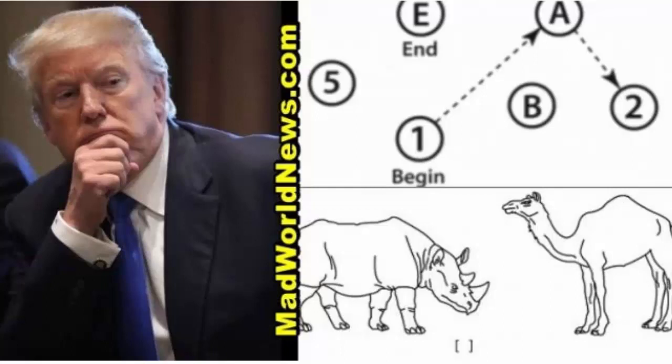Question 7: Sentence Repetition. Step 1: Have the examiner read this sentence and repeat it exactly: I only know that John is the one to help today. Step 2: The examiner then reads another sentence with the same instructions: The cat always hid under the couch when dogs were in the room. One point is given for each correct sentence using exact repetition and no synonyms substituted, that is it must be hid not hides.